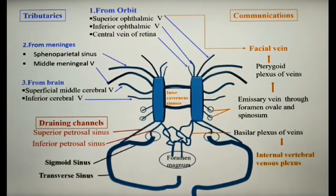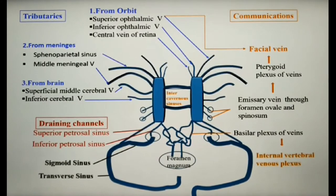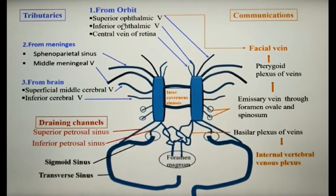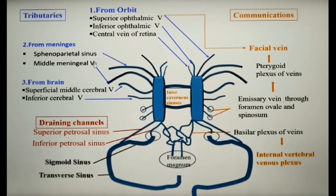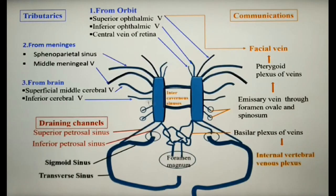There are a few incoming channels to the cavernous sinus — that means there is blood flow from different regions into the cavernous sinus. From the orbit, the superior ophthalmic vein, the inferior ophthalmic vein, and central vein of retina drain into the cavernous sinus on either side. The meninges drain into the cavernous sinus via the sphenoparietal sinus and middle meningeal vein. Similarly, drainage from the brain reaches the cavernous sinus through the superficial middle cerebral vein and inferior cerebral vein.